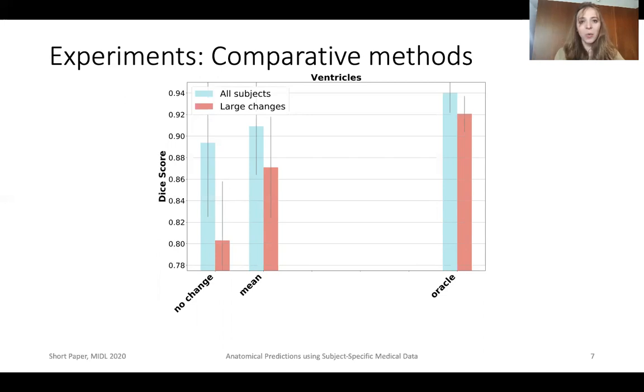Finally, we compare our model to the oracle, our upper bound, where the deformation field is the output of our registration algorithm, which is given as input both the baseline scan and the follow-up scan, which our model does not have access to. The oracle tells us the best that we can possibly do.